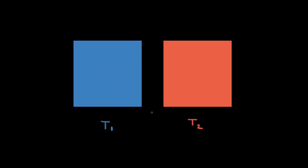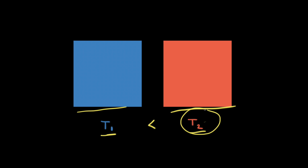Instead of gases, let's look at two metal blocks made of the same material. One metal block is at temperature T1 and the other is at temperature T2, where T2 is greater than T1. That means the particles in the metal block on the right are on average moving faster than the particles in the metal block on the left, so the average kinetic energy of the particles on the right is greater than those on the left. Also, right now our two pieces of metal are not touching each other — there's a little bit of space between them.